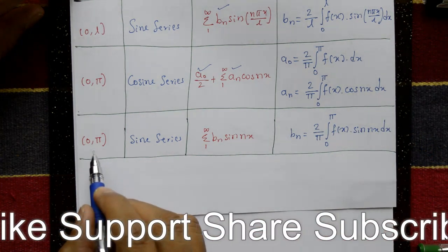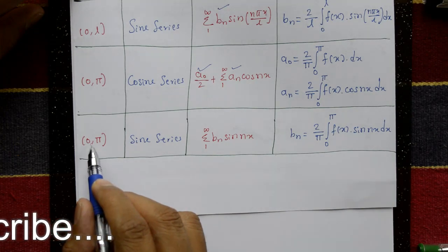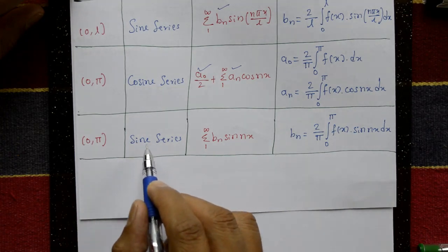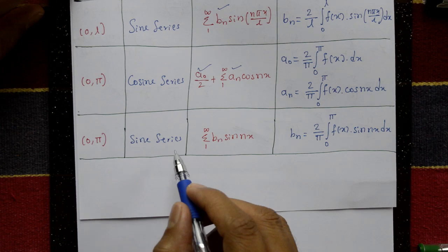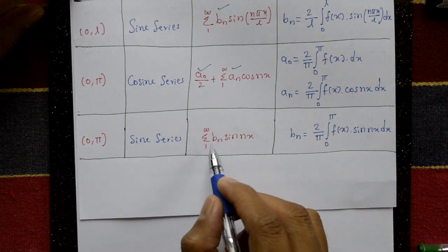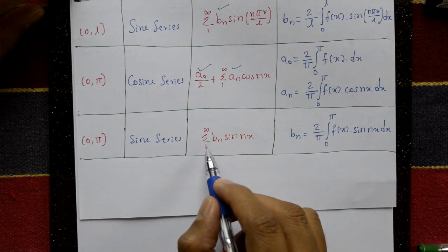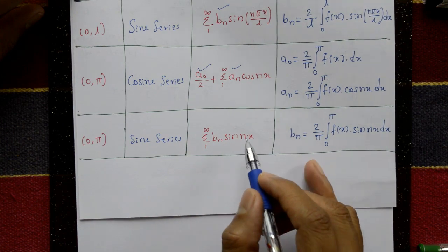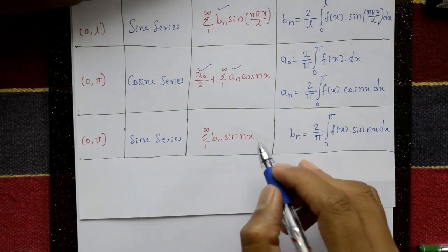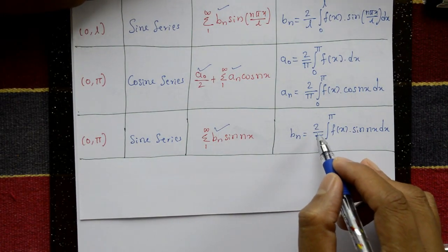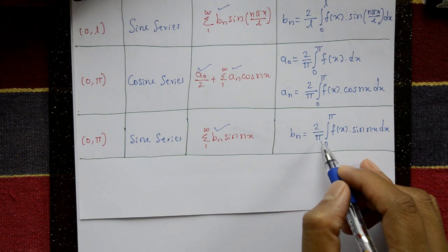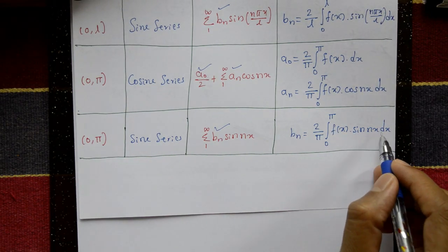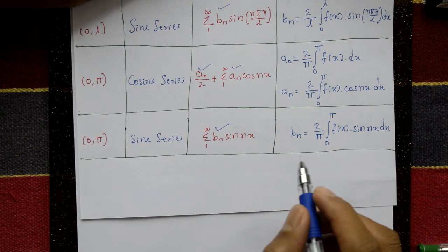The fourth case is when the interval of f(x) is 0 to π and the series is a sine series. Then f(x) equals the summation from 1 to infinity of bₙ sin(nx), where bₙ = (2/π) ∫₀^π f(x) sin(nx) dx.